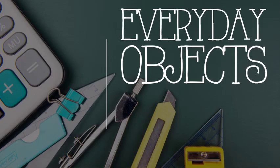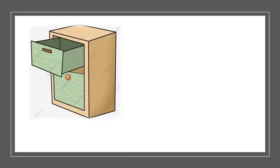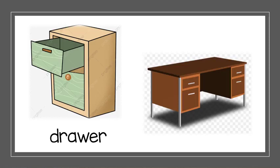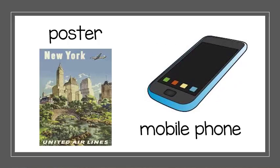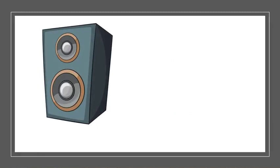First, we are going to look at everyday objects. Do you know what this is? This is a drawer. What about this? Table. Hmm, what's this? Poster. What about this one? Do you know? Poster. What about this one? Speaker.